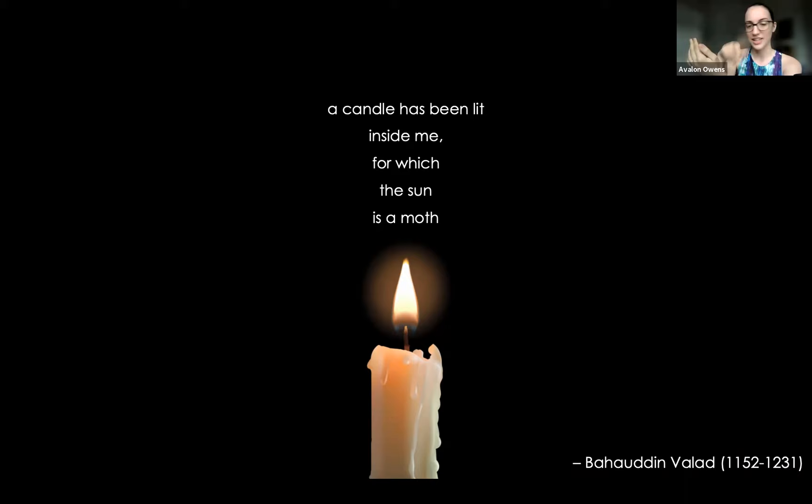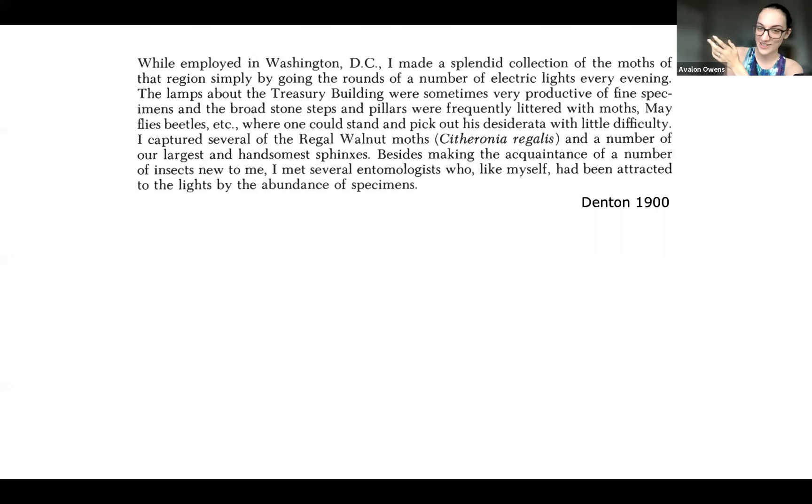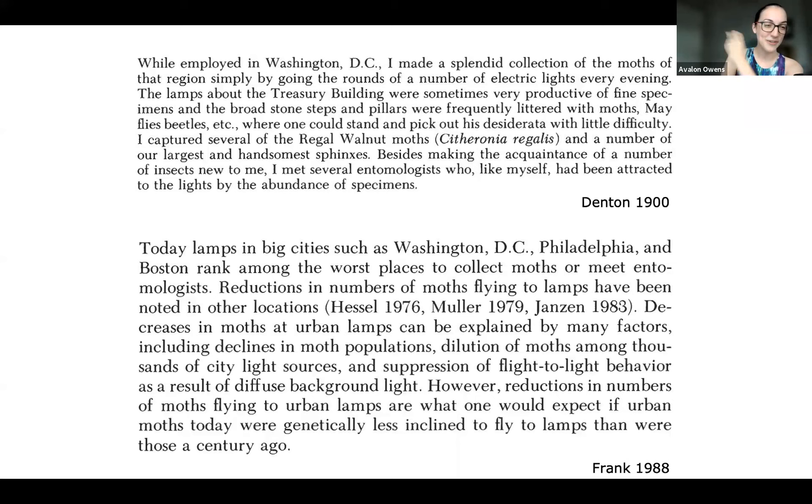Today's lights are not made of fire, so they usually don't immediately kill insects. Insects will tend to kind of hang around. They might sit there stunned or sort of circle endlessly. At the advent of electric lighting, a lot of people noticed insects fly to lights. Some entomologists were really interested in this. Entomologists used electric lights to capture insects, starting in the 1850s. At least in 1900, we had this fellow who was an entomologist employed in DC who made a splendid collection of the moths simply by going the rounds of a number of electric lights every evening. He met several entomologists who had been attracted to the light by an abundance of specimens. As Kenneth Frank pointed out in 1988, today lamps in big cities such as DC, Philadelphia, and Boston are among the worst places to collect moths or meet entomologists.